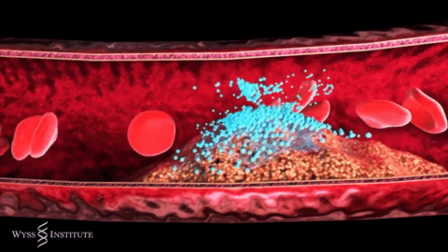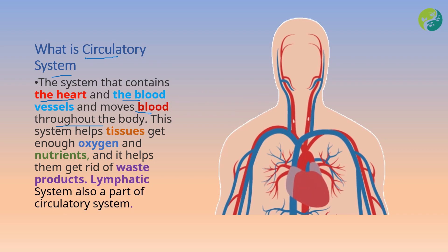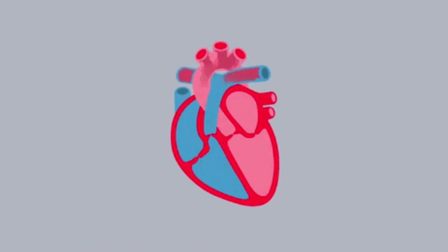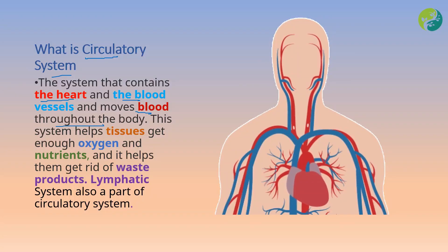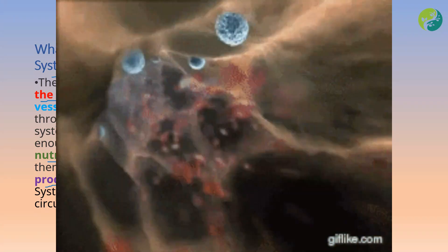The circulatory system is the system that contains the heart and blood vessels, and moves blood throughout the body. This system also helps to get enough oxygen and nutrient supply, meaning all tissues of the body get enough oxygen through the circulatory system. It also helps to get rid of waste material from the body.